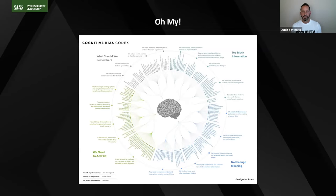They started researching and writing about this in the 70s and 80s, and it started to reach popular mainstream. In 2002, Kahneman received the Nobel Prize for his book Thinking Fast and Slow — hence the subtitle of today's lecture about thinking more slowly.